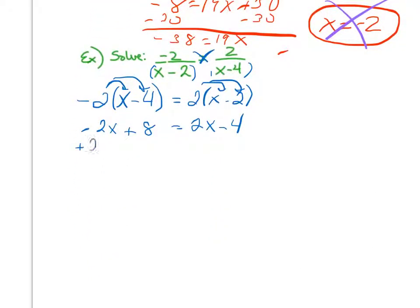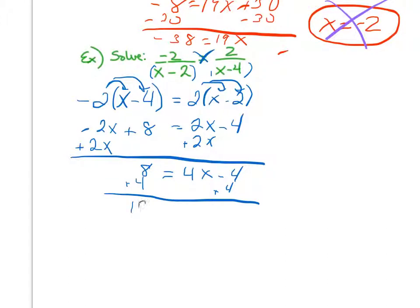Again, I want my variable to be on only one side, so I'm going to add 2x to each side, giving me 8 equals 4x minus 4. I'll add 4 to both sides because I get rid of add or subtract before getting rid of multiply or divide. 12 equals 4x.